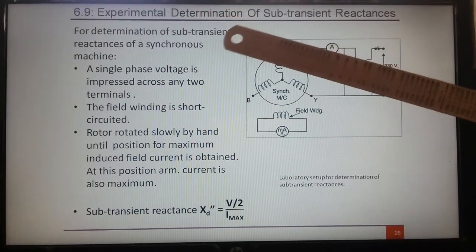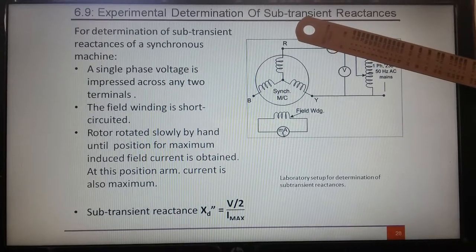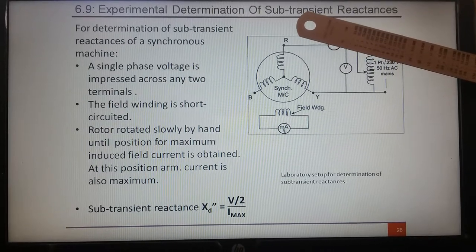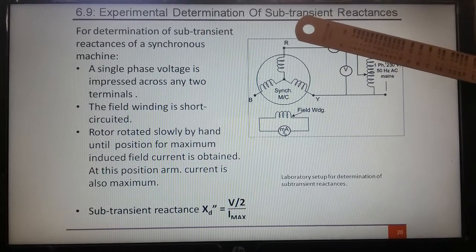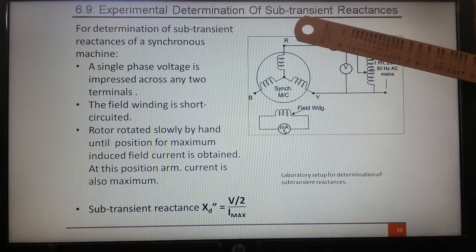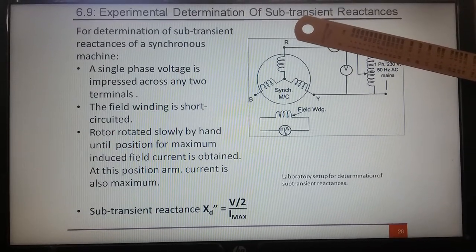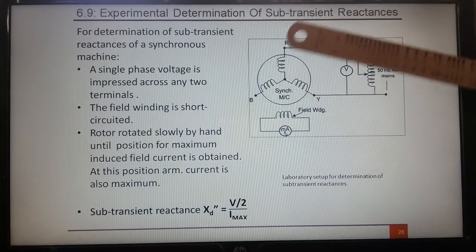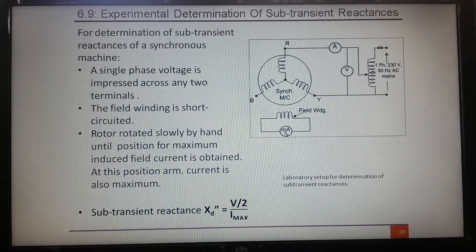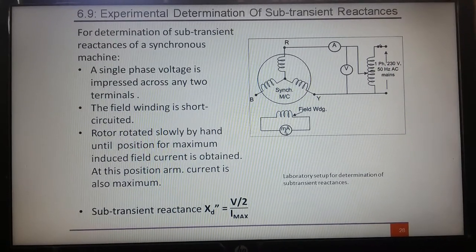The topic is experimental determination of sub-transient reactances in the sudden short-circuit case of a synchronous machine. We have discussed what the sub-transient period is, and in that sub-transient period, the amount of reactance offered to the flow of sudden short-circuit current is termed as sub-transient reactance, notated as XD double dash. We are now looking at how that reactance is experimentally calculated.